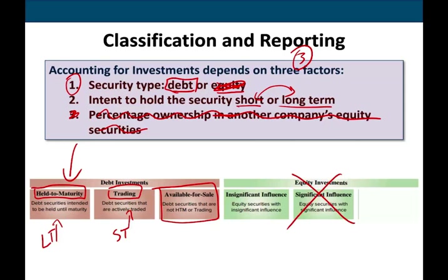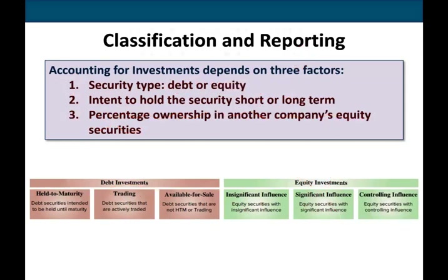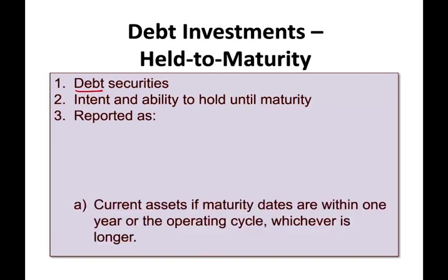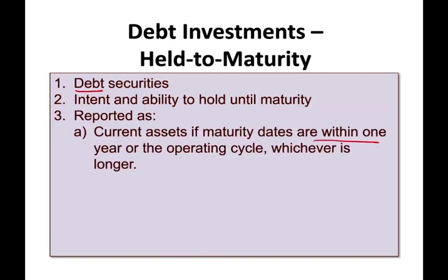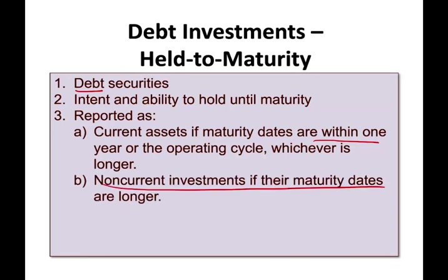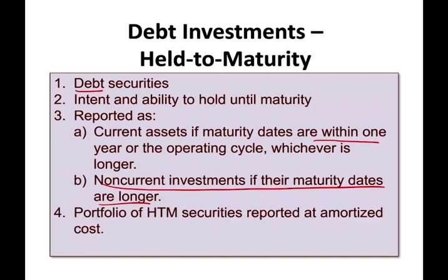We skip equity investment for this session; the next session covers equity investments. Held-to-maturity securities can only be debt securities because equity securities don't mature — stocks don't have a maturity date, but a bond does. We intend to hold it until it matures. It's reported as a current asset if maturity is within one year; otherwise it's non-current. The portfolio of held-to-maturity securities is reported at amortized cost.